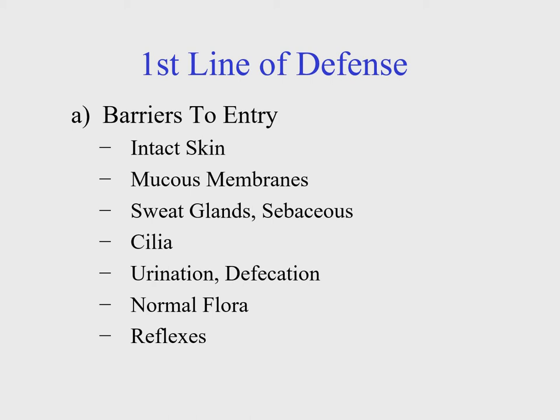The first line of defense begins with healthy intact skin as the primary barrier to the outside world. Anywhere beyond the skin, like natural orifices, will have mucous membranes present. Housed within our skin are sweat glands and sebaceous glands with secretions that help limit bacteria. Sweat glands secrete salt, and that increase in salt significantly limits the types of bacteria that can survive on the skin.